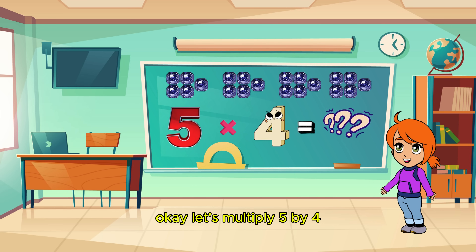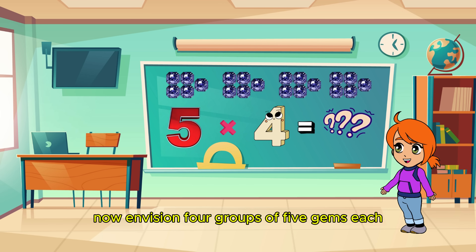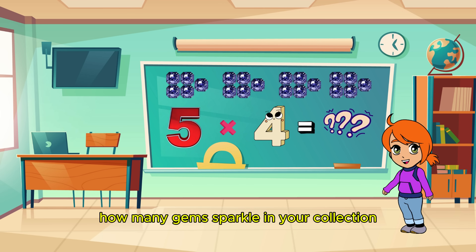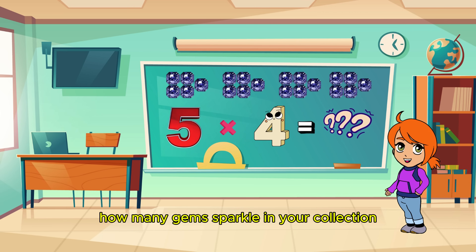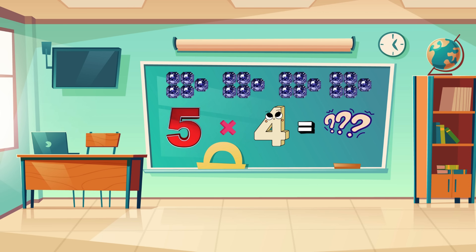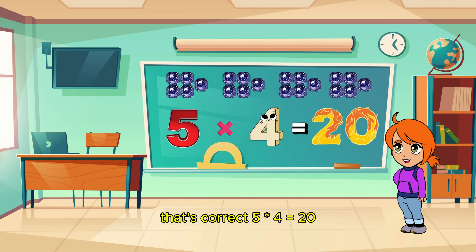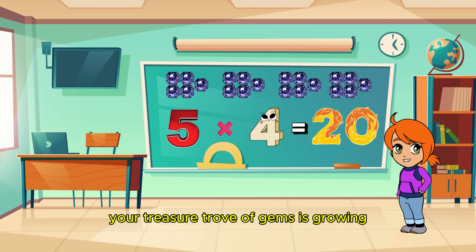Let's multiply 5 by 4 now! Envision 4 groups of 5 gems each. How many gems sparkle in your collection? Yes, that's correct! 5 times 4 equals 20! Your treasure trove of gems is growing!